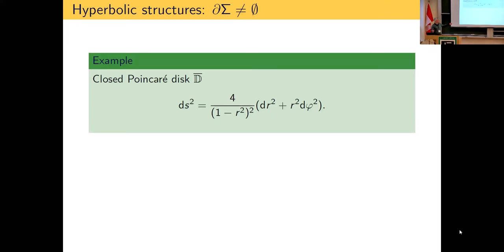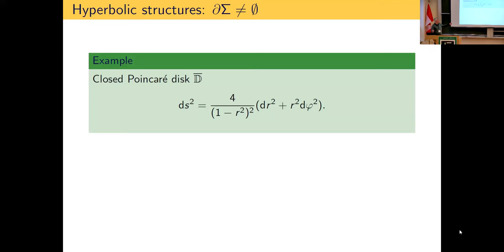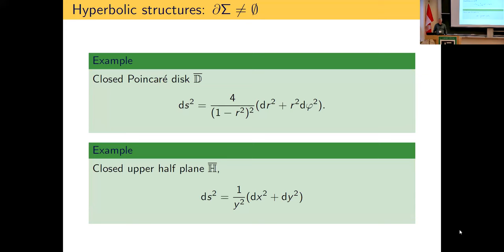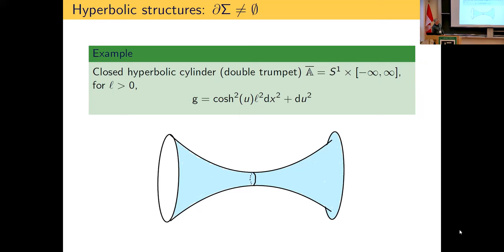The very first example of course is the closed Poincaré disk itself — that's a hyperbolic structure with just the identity as a chart. You can see the metric goes like 1/y² if you introduce y = 1 − r as a boundary-defining function. Or even simpler: the closed upper half-plane, where you can directly see it goes like 1/y².